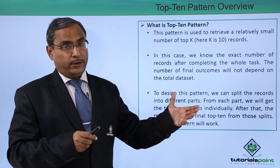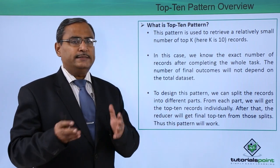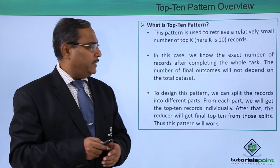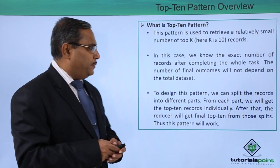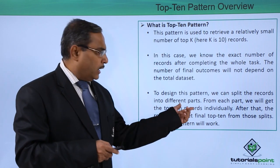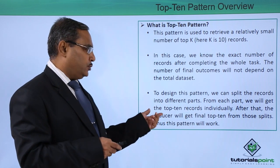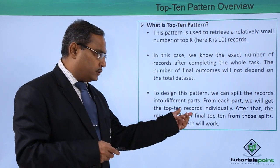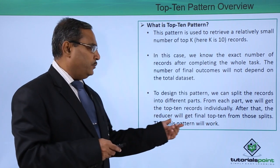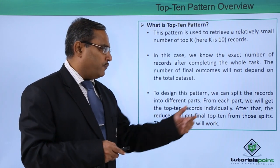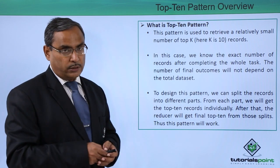How many records are there in the initial input splits? It is irrespective of that. To design this pattern, we can split records into different parts, and from each part we will get the top 10 records individually. After that, the reducer will get the final top 10 from those splits, and thus this pattern will work.